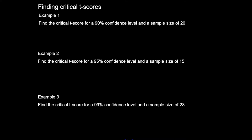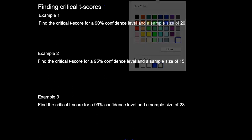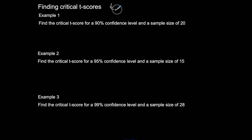We're finding critical t-scores — critical values on the Student t-distribution. We've done this with the standard normal distribution, and now we do it with the Student t-distribution. We're finding t of alpha over 2 — just like you saw z of alpha over 2 — the critical t value corresponding to this area, usually the positive version in the right tail.